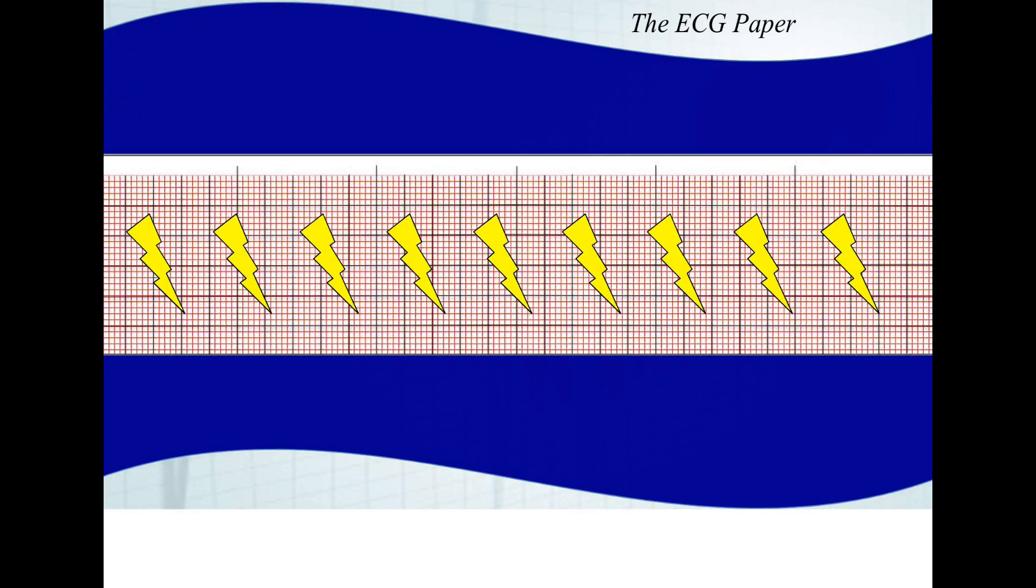Based on what we've learned about EKG paper, we can make determinations about regularity and determine heart rate. For instance, we said this was a six-second strip, because there are five large boxes for every second, and we have one, two, three, four, five, six seconds.